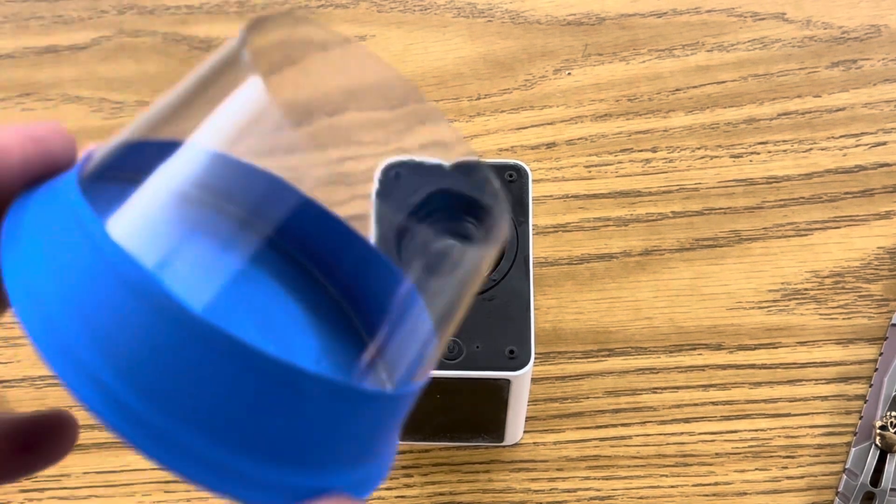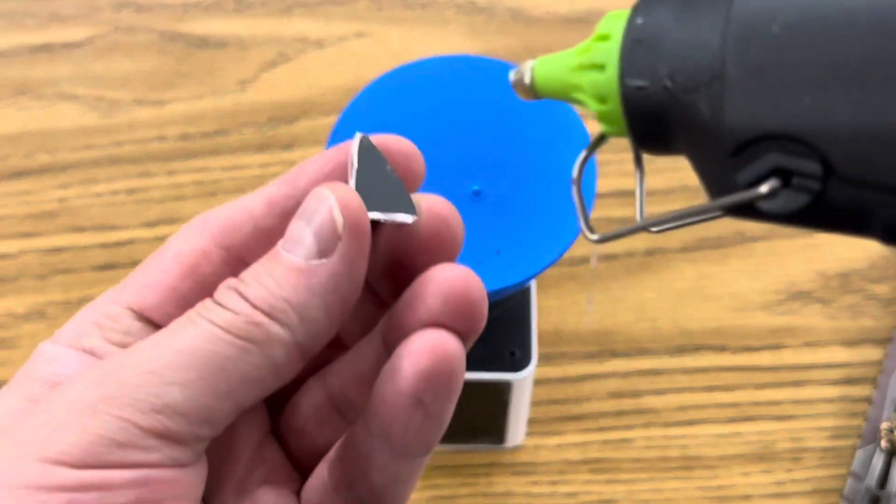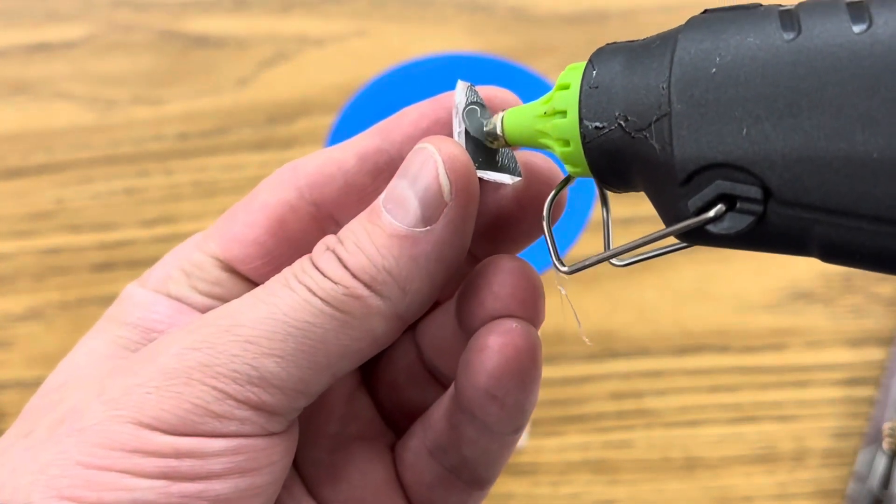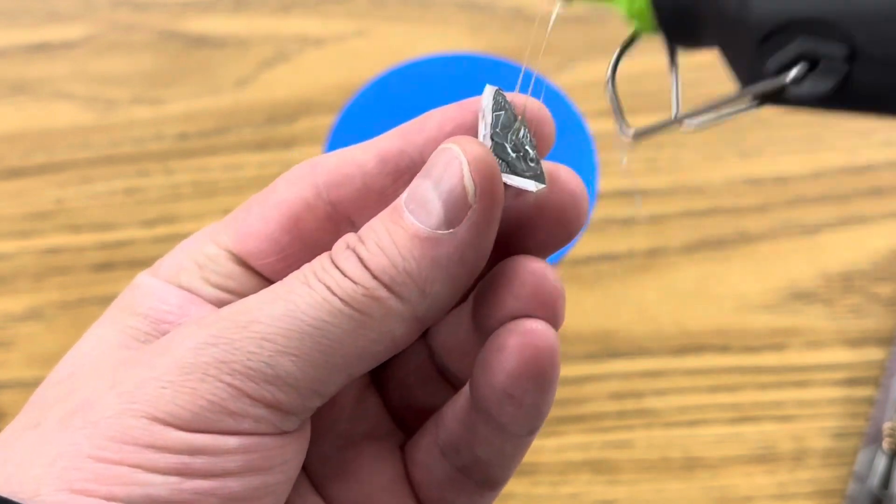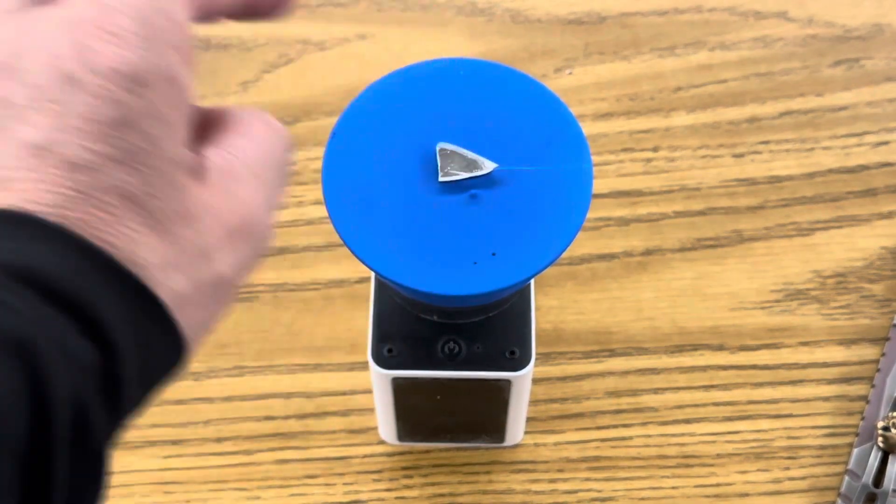So once you've cut out the back, you want it to rest right over your Bluetooth speaker. And then you're going to glue with your hot glue gun that little piece of mirror, and you want to get this right in the middle of it. So it looks like that.